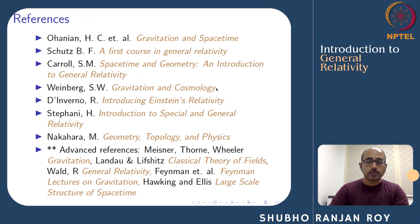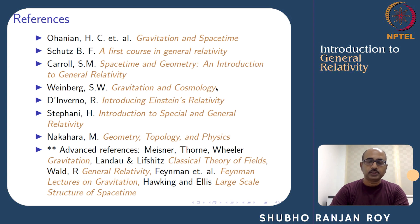No single textbook will be followed for this course, but from time to time we will give references to material — books and journal papers as well. Here are some standard references. The first three are advanced undergraduate level texts on General Relativity. The next three are postgraduate level texts. Nakahara's book would be a good supplement for the mathematics preparation part of the course. We will also draw from advanced references such as Misner, Thorne and Wheeler; Wald; Penrose; and Hawking and Ellis.